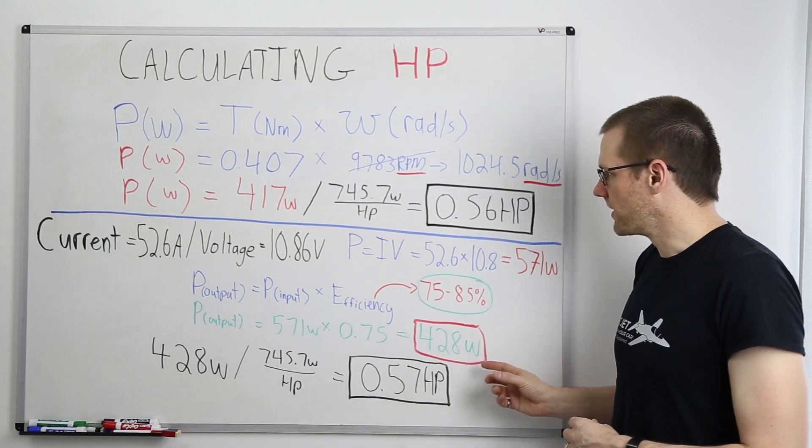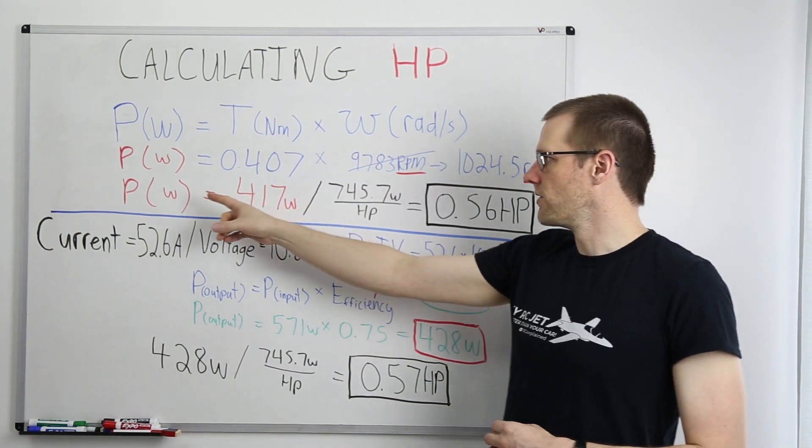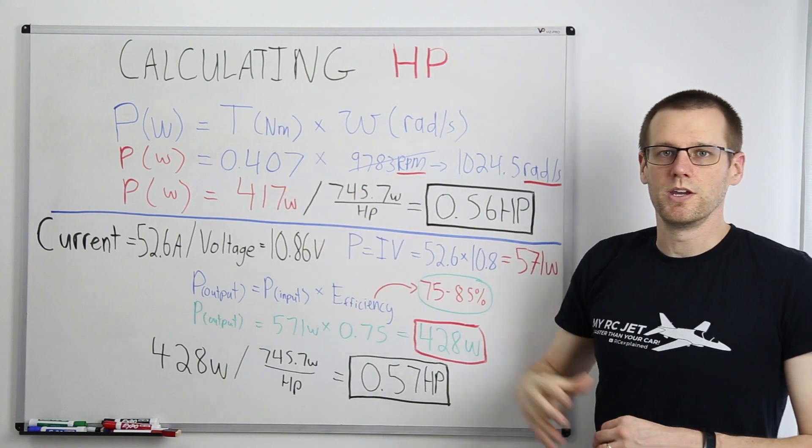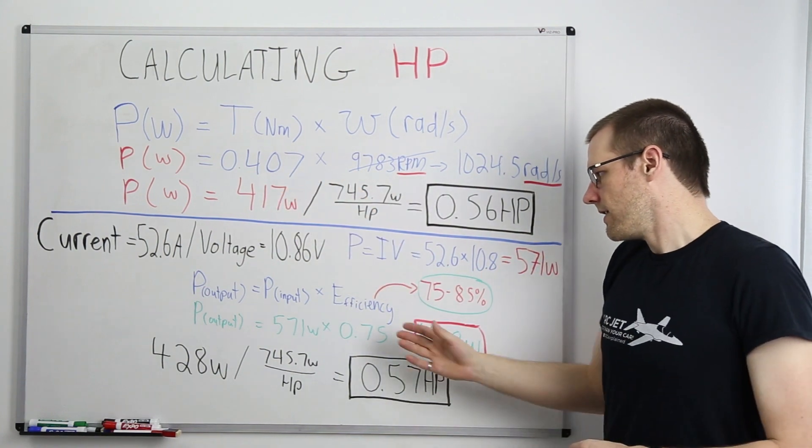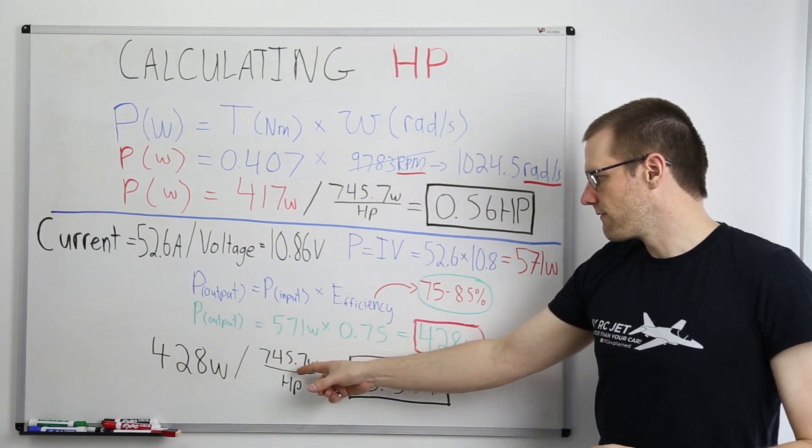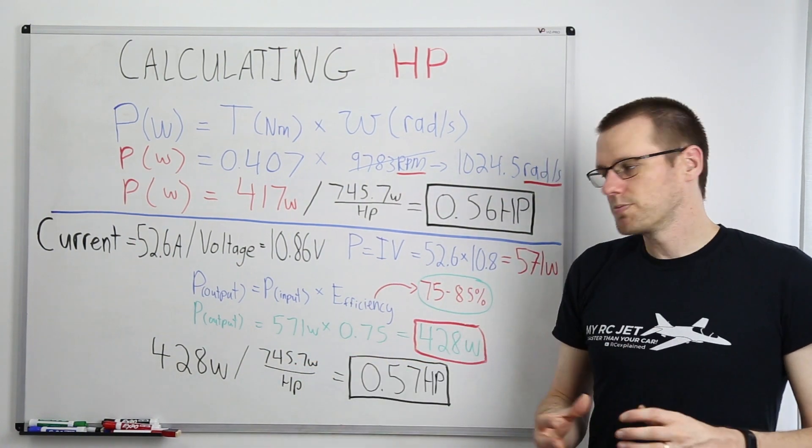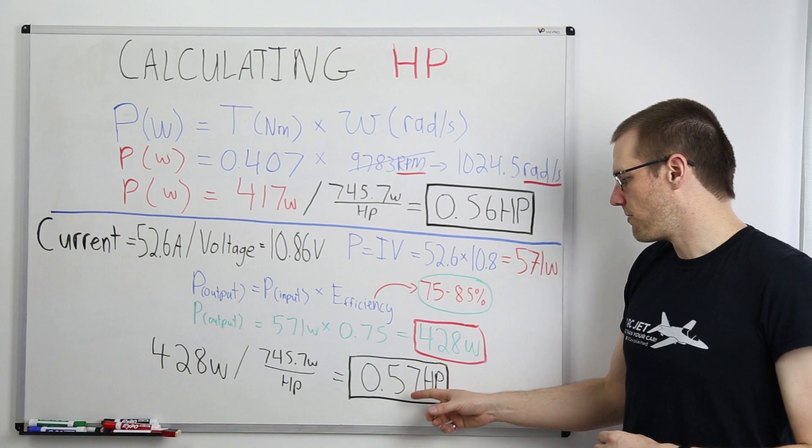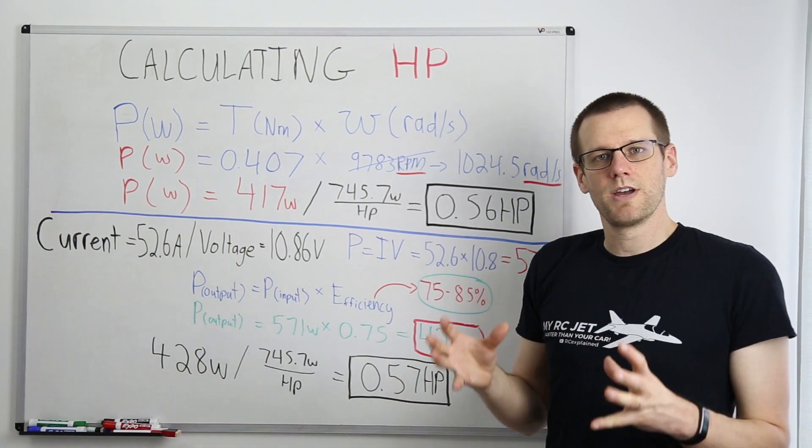This is the 428 Watts of power equivalent to our output, much like what we calculated above. Then all we need to do is take the 428, divide that by the 745.7 Watts per horsepower, and we get about 0.57 horsepower. So as you can see, we go through this using the actual values of torque measured and RPM.